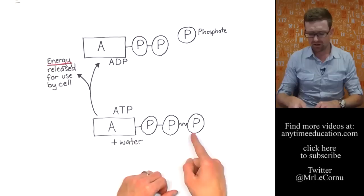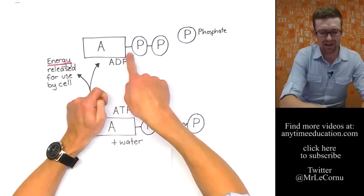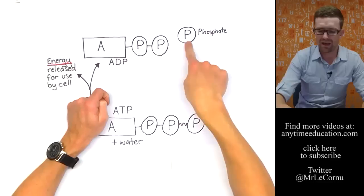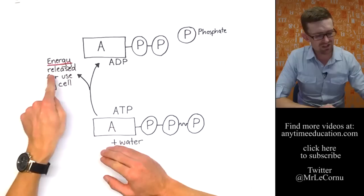Now with the addition of some water, a hydrolysis reaction occurs and this phosphate is broken off. That means that ATP is converted into ADP, D standing for di, which means two, and a spare phosphate group over here. So that conversion takes place.